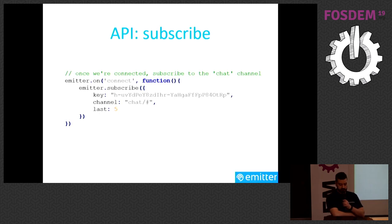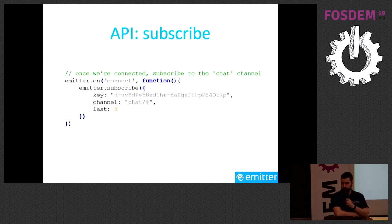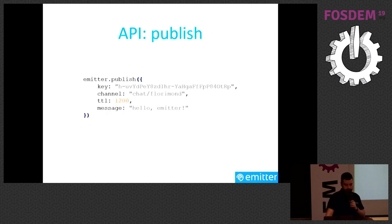Here's how the API looks in JavaScript. To subscribe, you call emitter.subscribe(), providing the key, the channel you want to subscribe to, and an optional last parameter specifying how many stored messages you want to receive. To publish, you call emitter.publish(), providing the API key — which may have different permissions from the subscribe key — then the channel, for example /chat/florimo, and your message, which can be a string or binary. There is also a ttl option — the number of seconds you want the message to be stored.